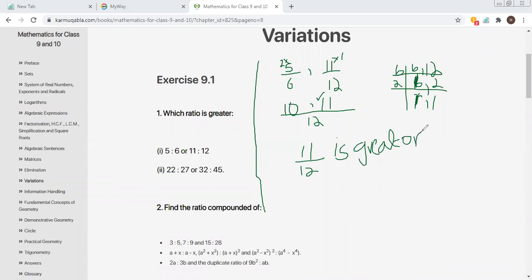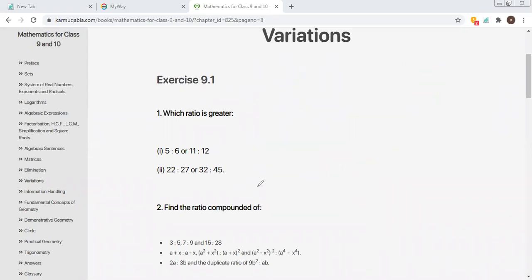Can you do part two? Okay, it is the same and you can do it by yourself. Question number two: find the compounded ratio of 3 ratio 5, 7 ratio 9, and 15 ratio 28.